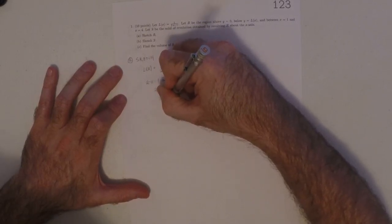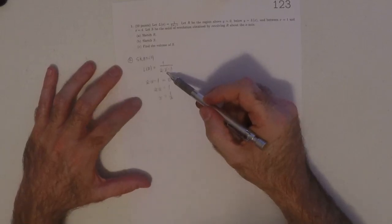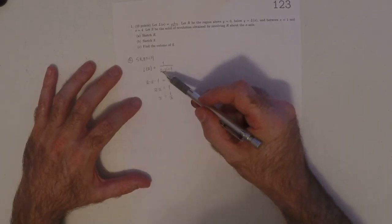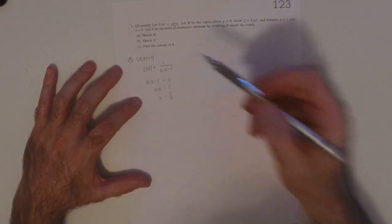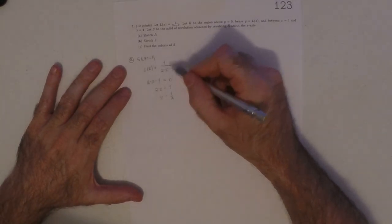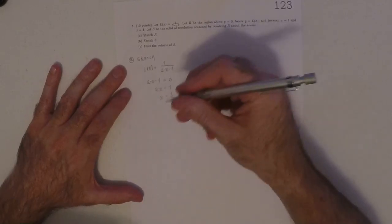So this would be 2x is equal to 1, so x is half. So at x is half, if you were to plug in half, that'd be 2 times half is 1, minus 1, that'd be a 0. So that's telling you for this particular function that there's an asymptote there.